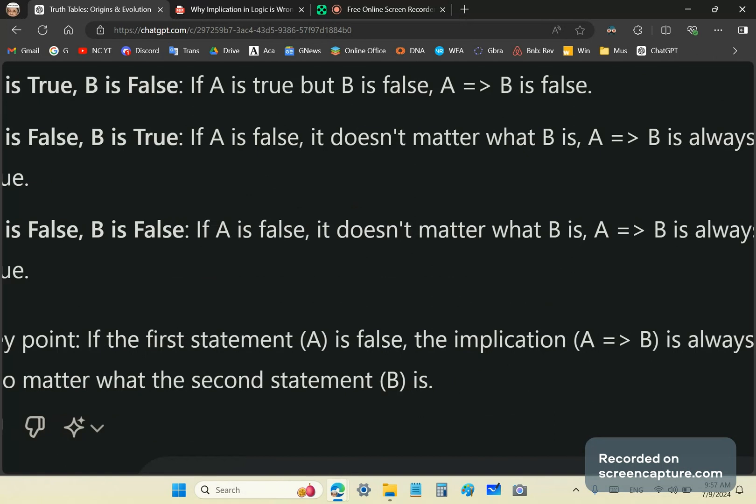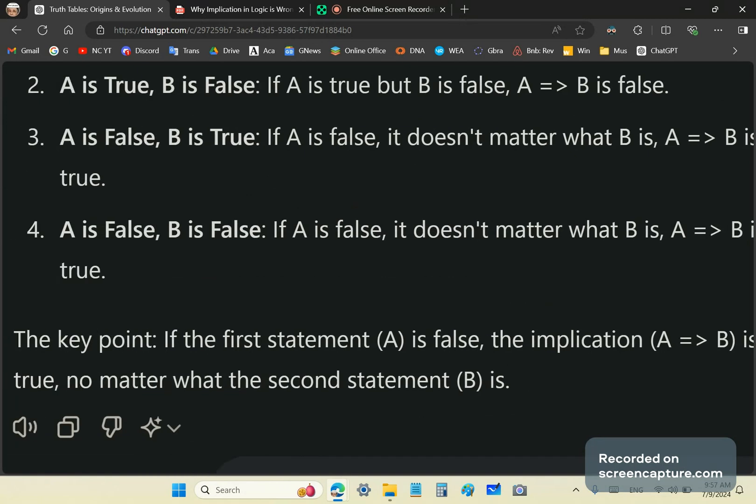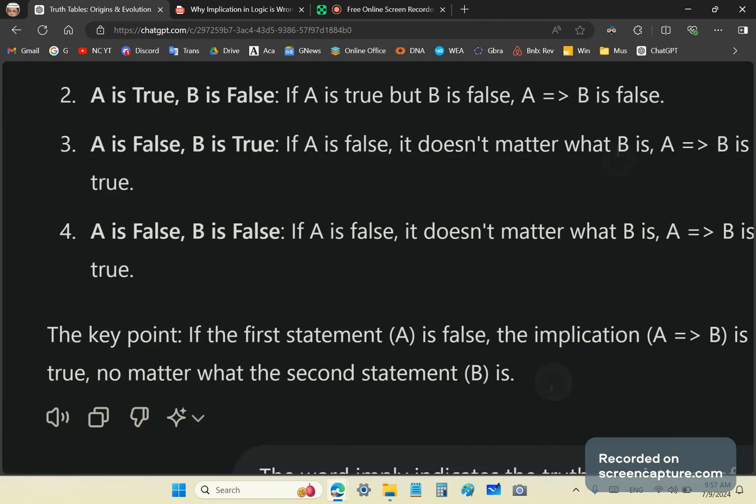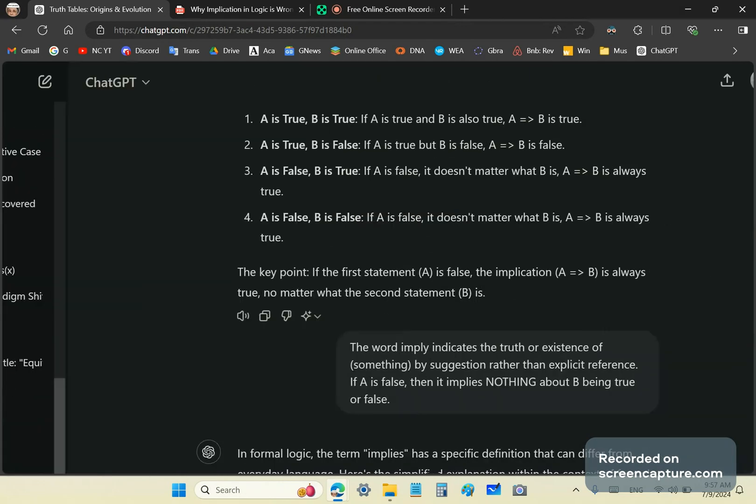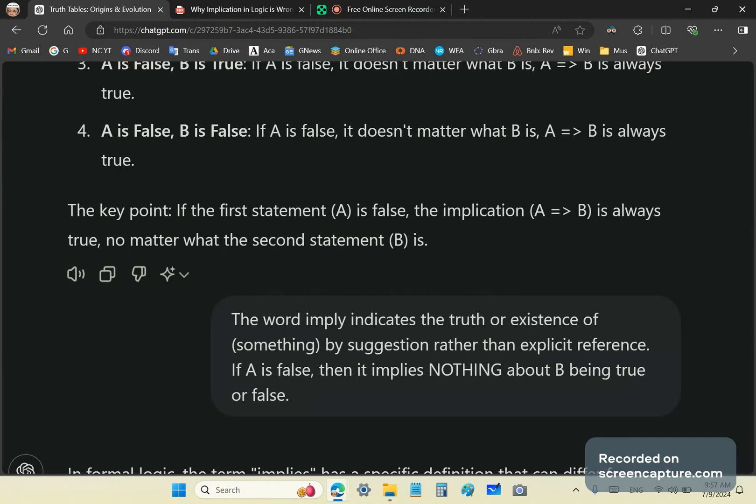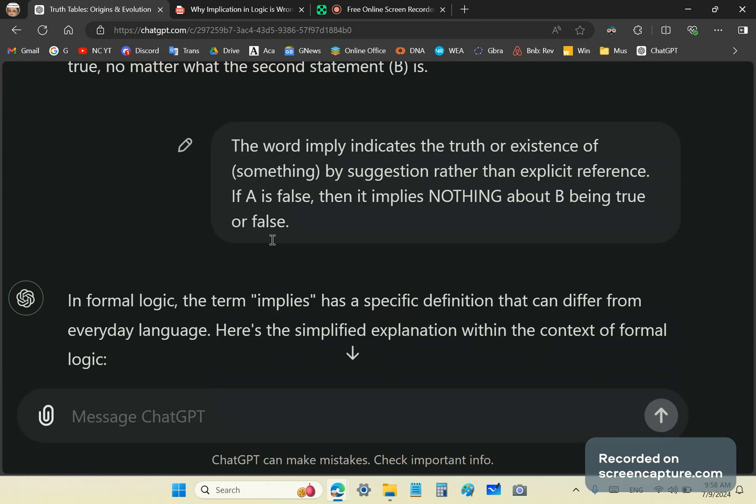So then I prompt GPT by telling it the word imply in ordinary language indicates the truth or existence of something by suggestion rather than explicit reference. So if A is false, then it implies nothing about B being true or false. So let's see how it responds.